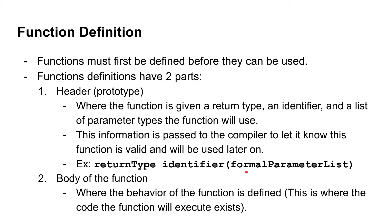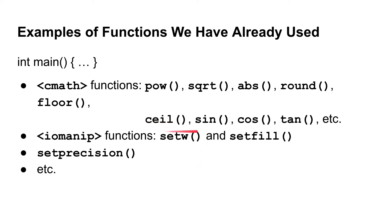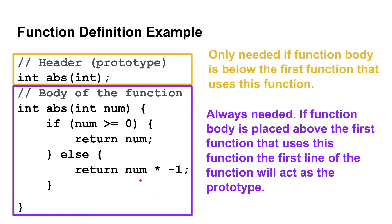We'll get into formal parameters more in the next video. After the header, we have the body of the function, where the behavior of the function is defined — it's where the code that the function executes will exist. For example, here we have an integer returning function named ABS, just like the CMath library function for absolute value, and we're going to pass it some integer, just like in the CMath library.